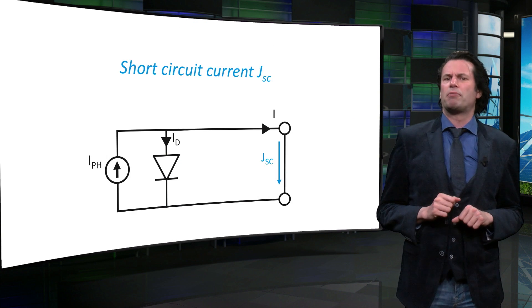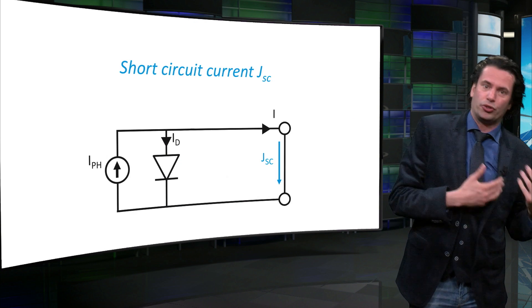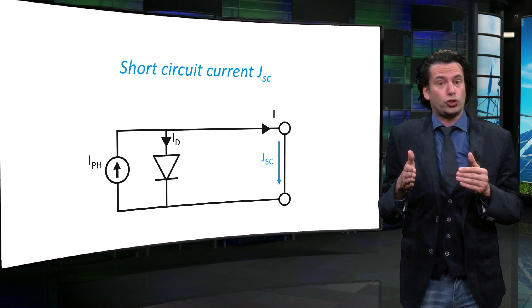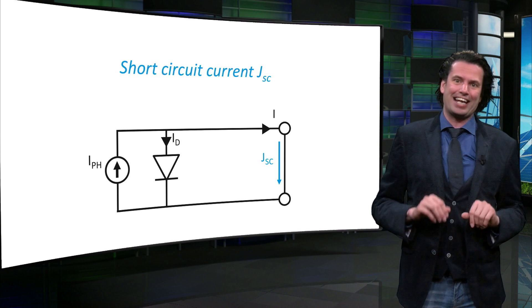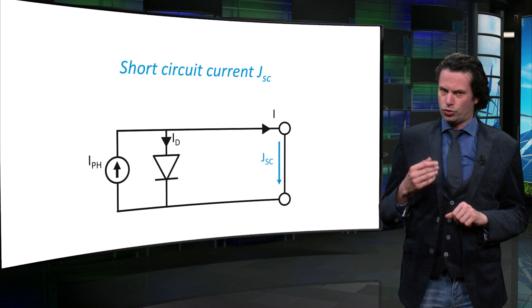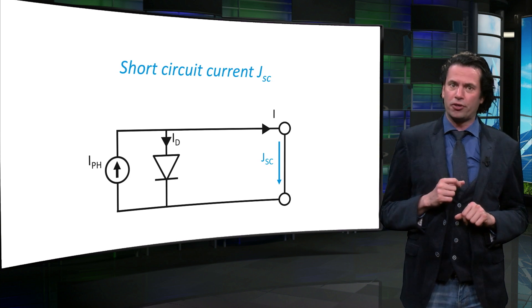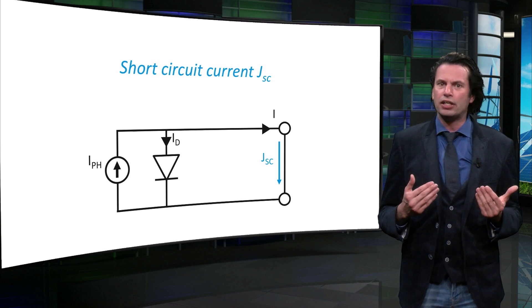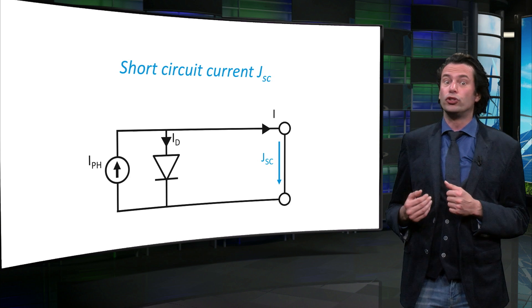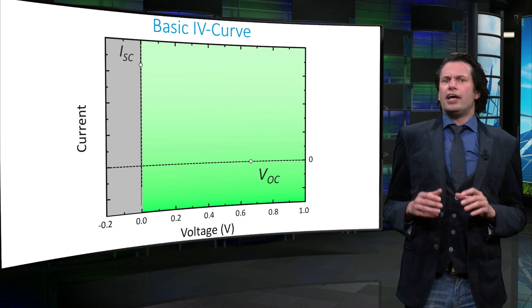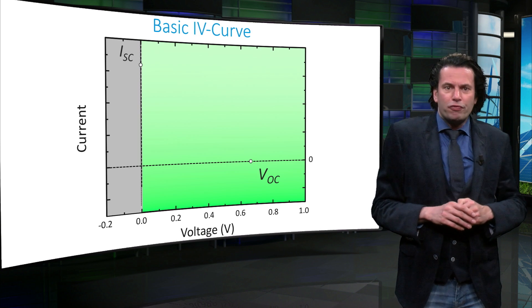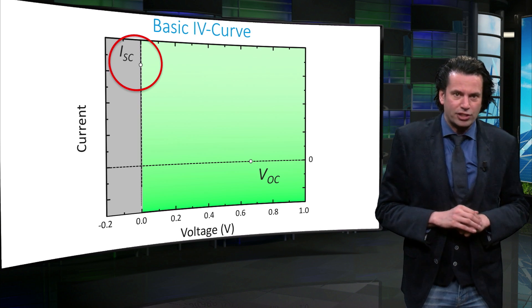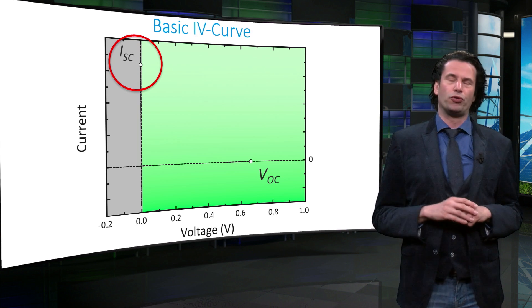Another important parameter is the short-circuit current. Now the external circuit of the cell is connected in a short circuit without any external resistance. The solar cell is only producing current and no voltage. The current that is now running through the device is called the short-circuit current. If we look back at the IV curve, we can see that the short-circuit current is a point on the vertical axis of the diagram exactly where the voltage is zero.